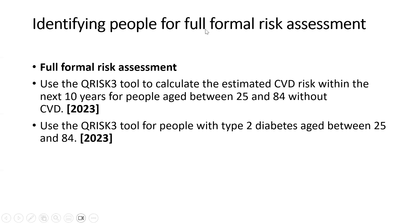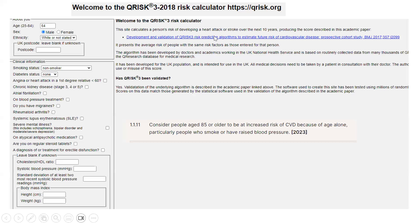NICE guidelines clearly define that we need to do a full formal risk assessment to estimate CVD risk within the next 10 years. We're talking here about primary prevention — patients without CVD, type 2 diabetes patients without CVD, aged between 25 to 84. We should use the QRISK3 tool, the latest calculator. Before 2018 we were using QRISK2. The QRISK3 calculator is easily accessible online.